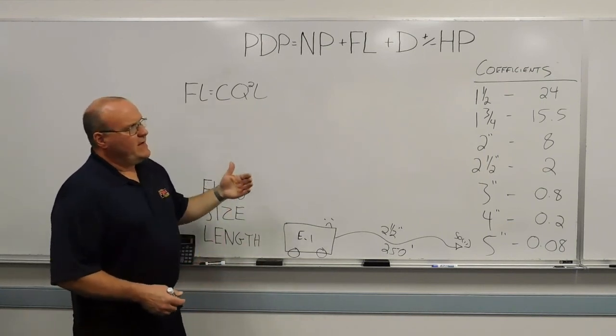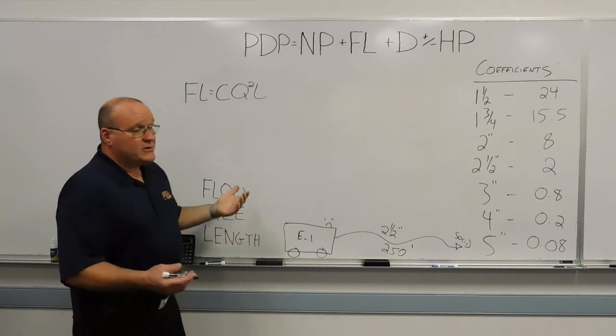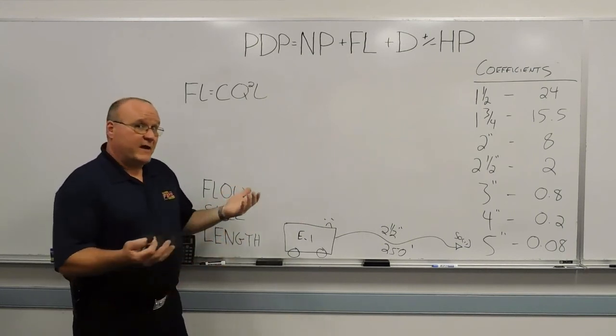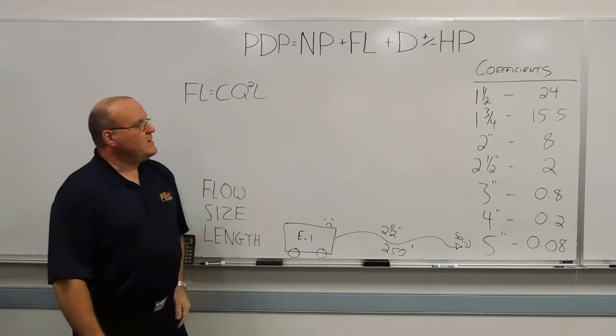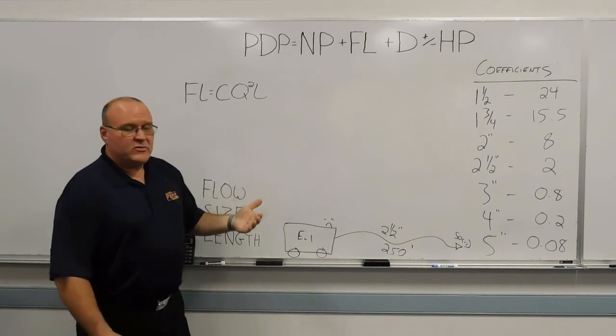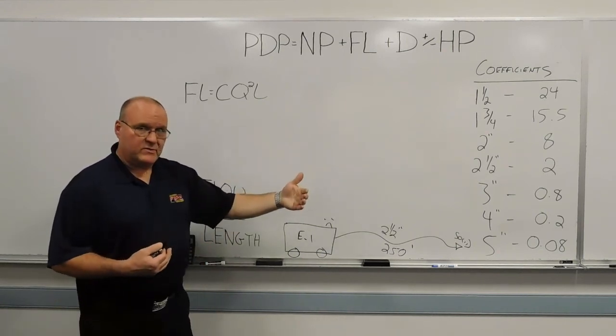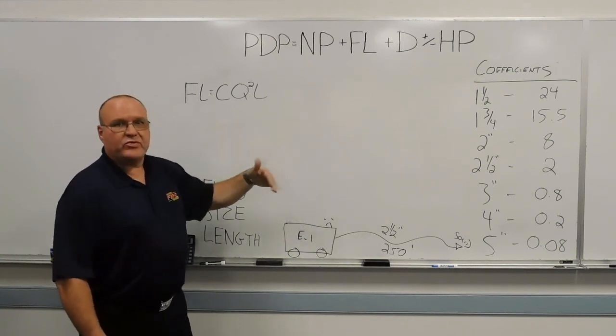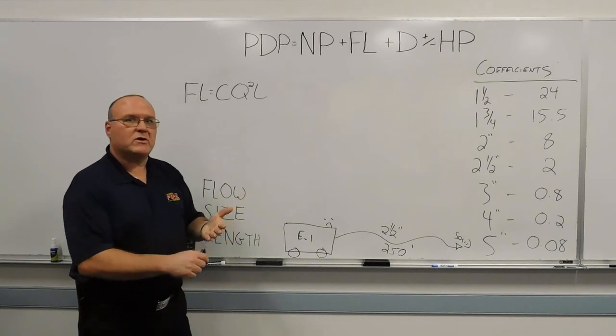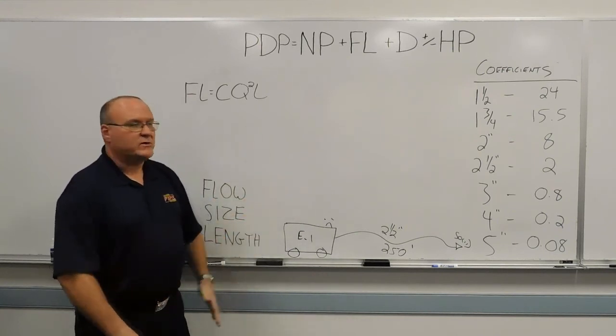The disadvantage to the coefficient formula is that it requires, if you're going to use that on a fire ground, a calculator. Because you're going to end up with a little stricter math. And then if you pre-plan your engine based on the coefficients that you have, you'll be able to have that preset pressure on a pumps chart or a discharge chart somewhere on your apparatus.